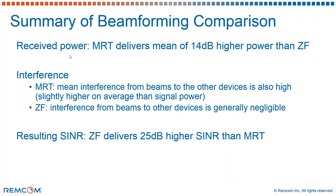For this beamforming comparison, the bottom line is that the received power from MRT was about 14 dB higher than zero forcing. But because of the interference from the other beams, and the fact that the interference was minimized by zero forcing, zero forcing was able to deliver an average of about 20 to 25 dB higher signal to interference plus noise ratio than MRT.